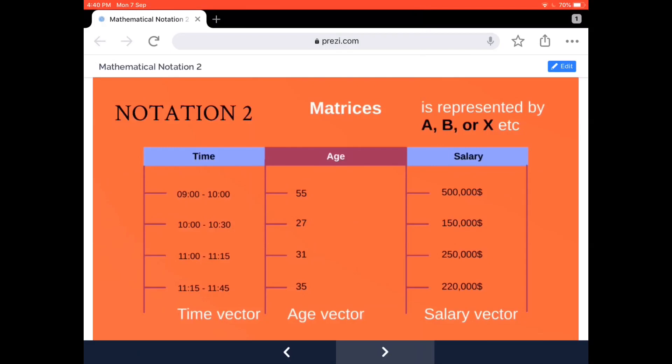Here you can see I've stacked three vectors next to each other—the time vector, the age vector, and the salary vector. This could be part of some data that we might be working with. It will probably have more columns and rows, but in this case we have four rows and three columns.